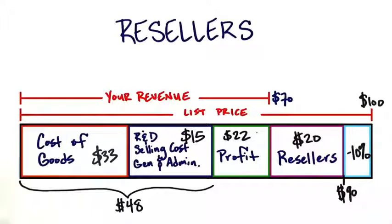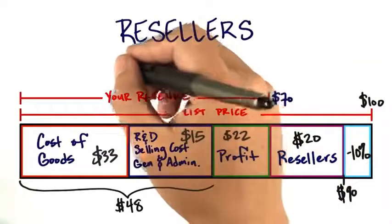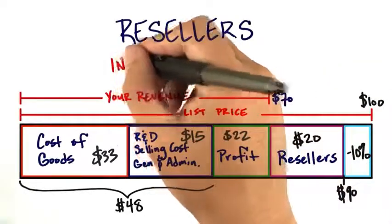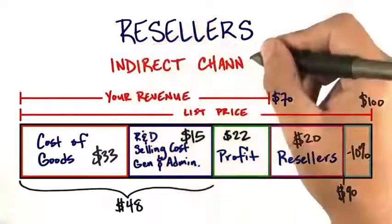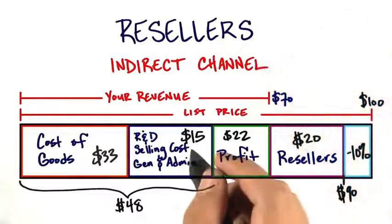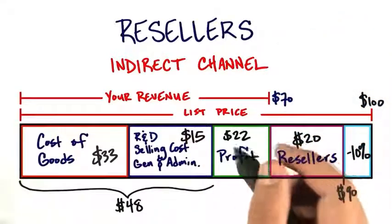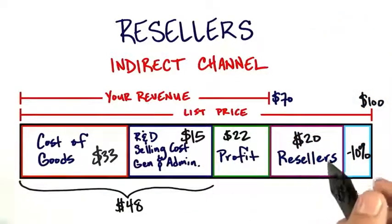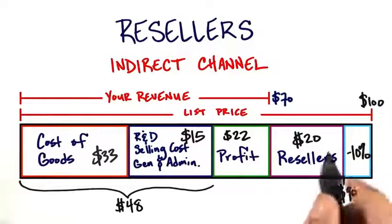Remember, our costs were lower. So one of the tradeoffs in using what's called an indirect channel is that your selling costs are lower, but you're giving a big chunk of your profit to other people not part of your company.